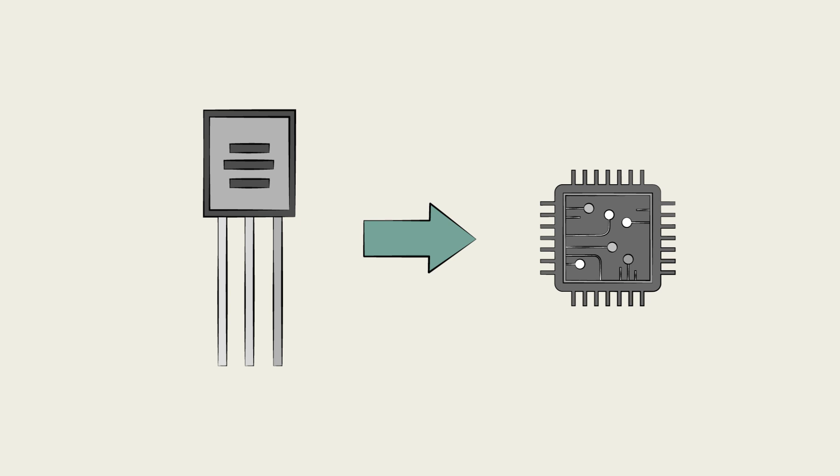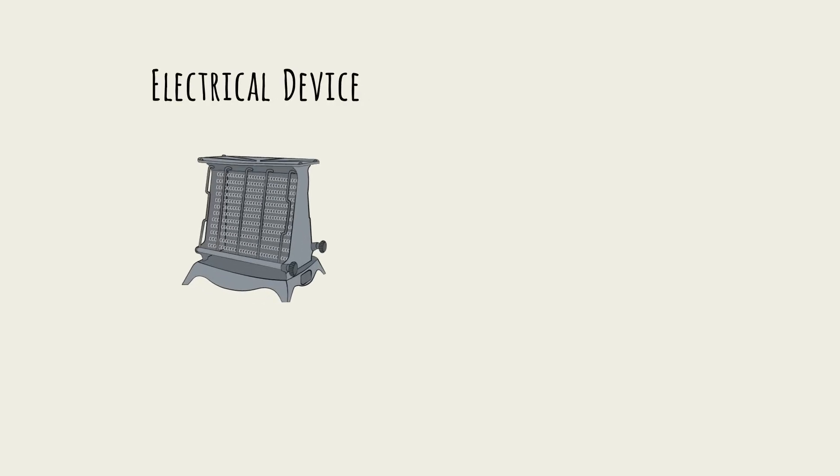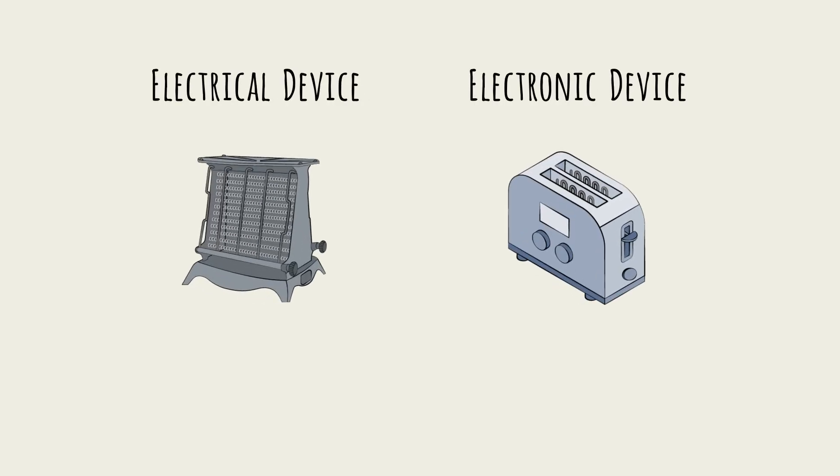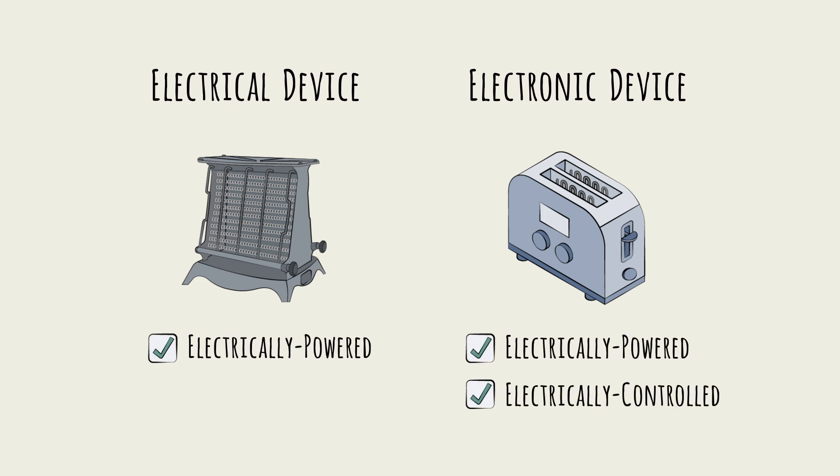So here was the big flip. Electrical devices became electronic devices – devices powered by electricity and controlled by electricity using chips. Since the 1950s, chips have rapidly advanced, and we've seen more innovative devices geared to more consumer use cases.